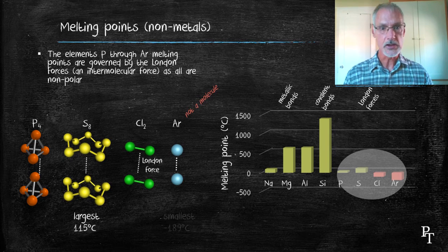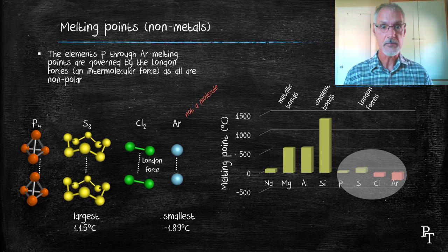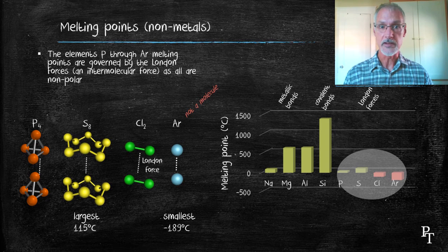We can see here that the largest of these molecules, and hence the greatest surface area and chance to make the London force, exists with sulfur. As a result, it tends to have the highest melting point of those in this region. Argon, on the other hand, being the smallest, has the lowest.